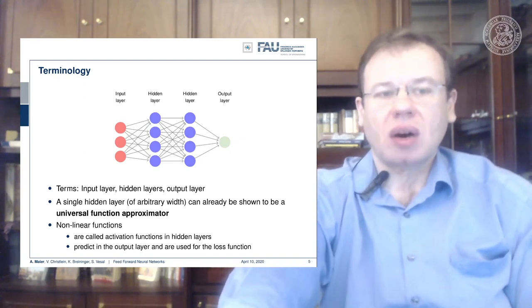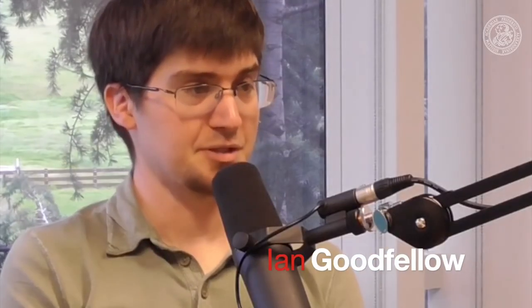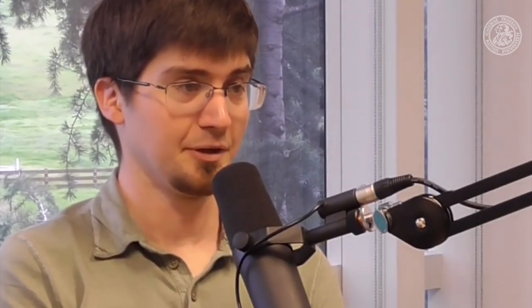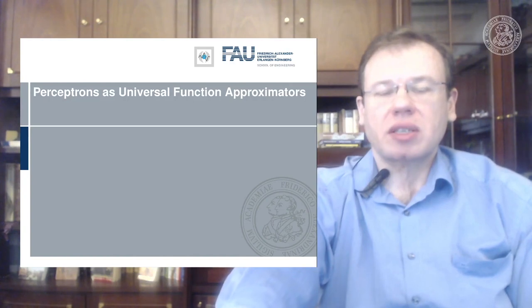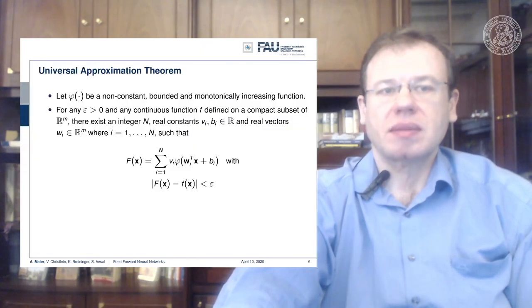So now we will look into the so-called universal function approximator. This is actually just a network with a single hidden layer. Universal function approximation is a fundamental piece of theory because it tells us that with a single hidden layer we can approximate any continuous function.